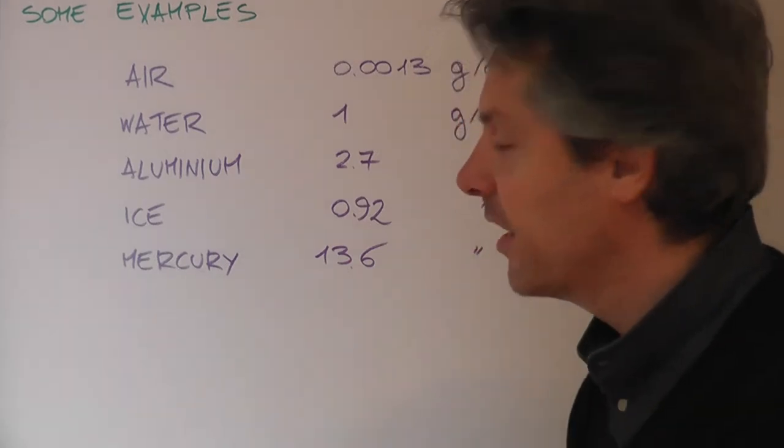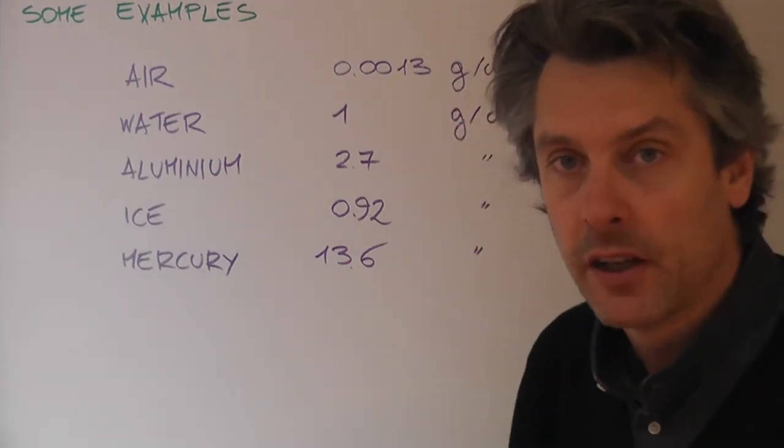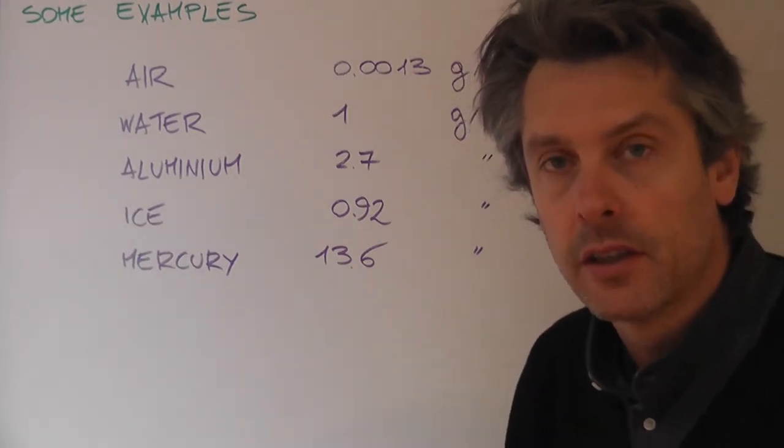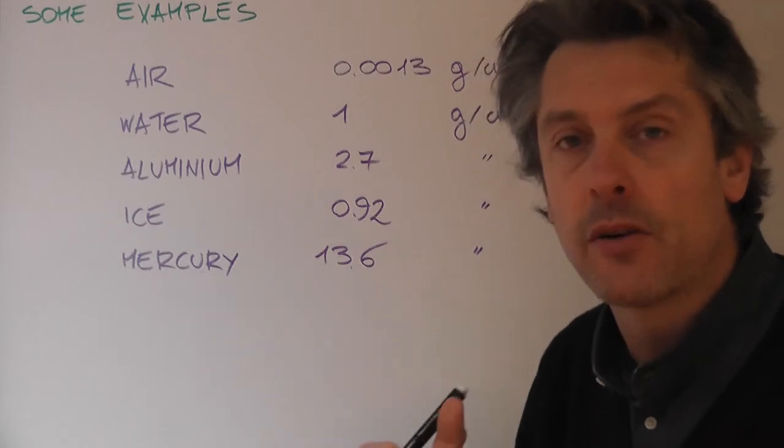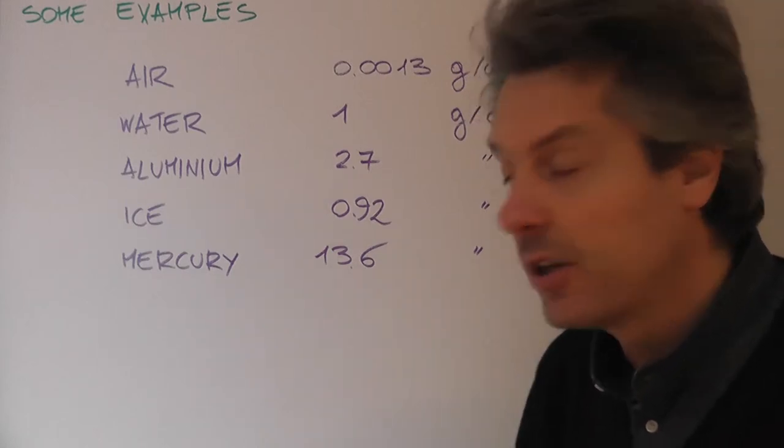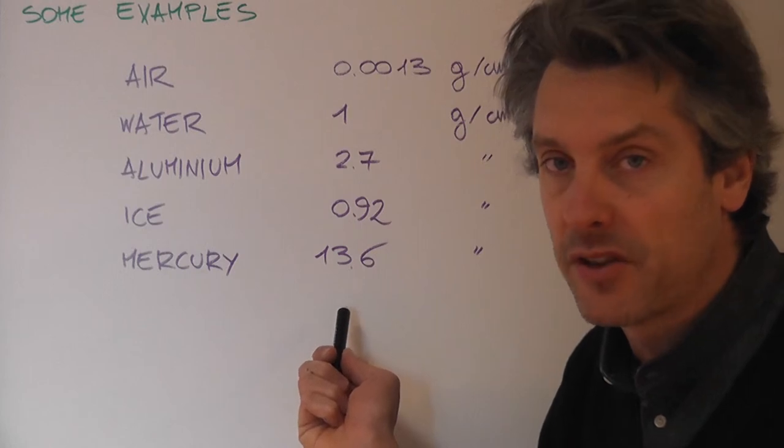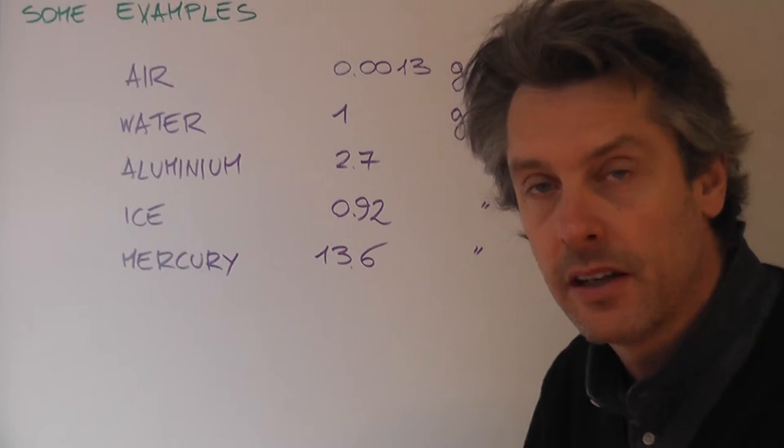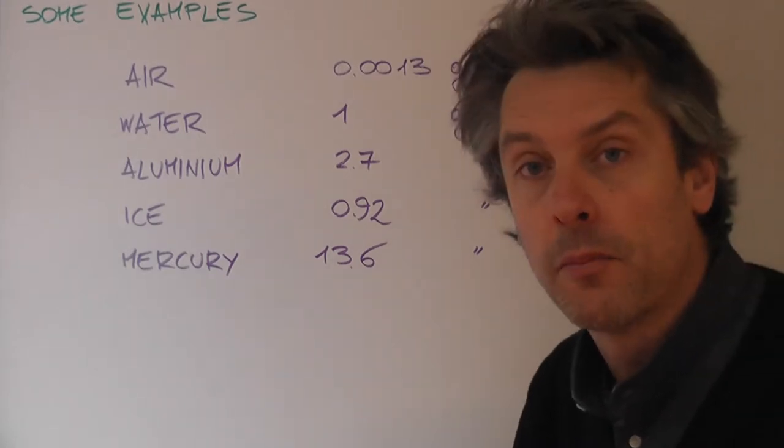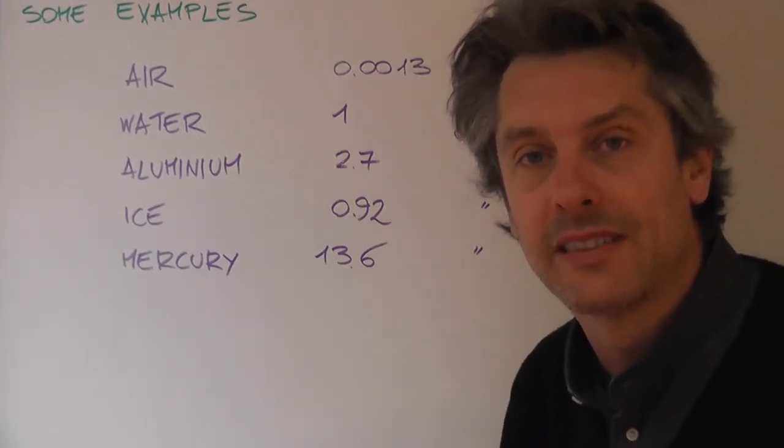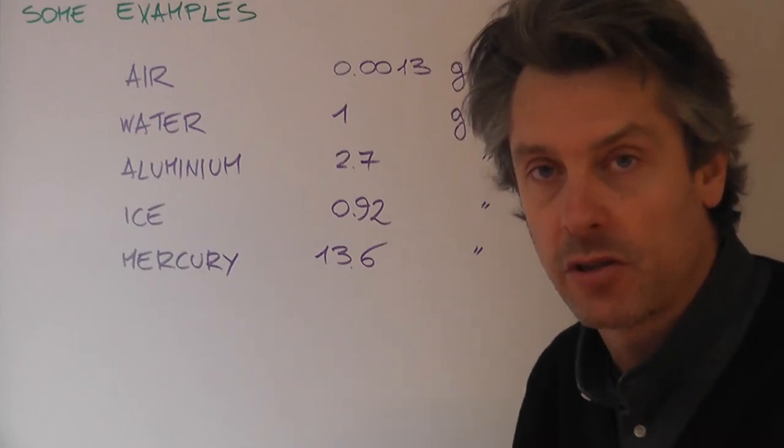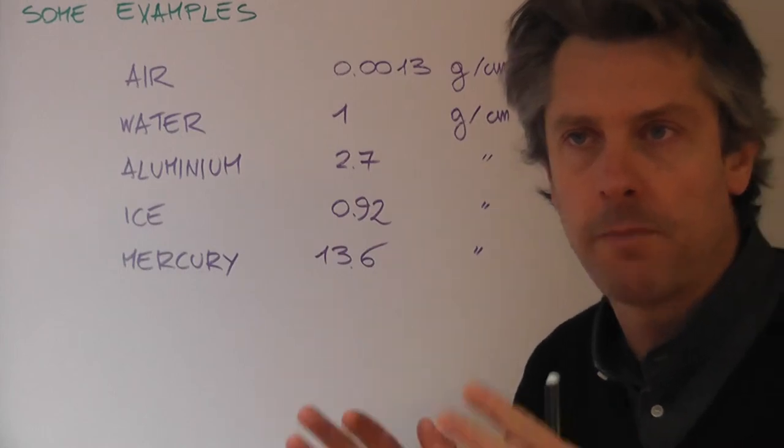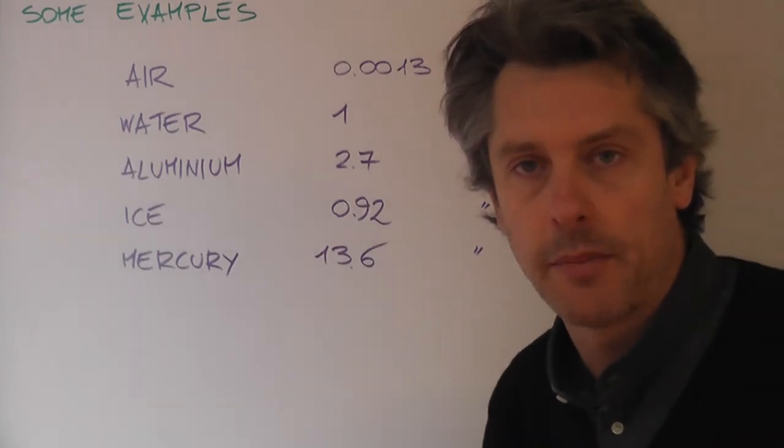But even more interesting is the metal mercury. We know that at room temperature mercury is a liquid. Despite that, it's a very dense material, one of the densest elements out there. It has a density of 13.6, more than four times more dense than aluminum. Yes, there is a pattern, but keep in mind that there are some exceptions.